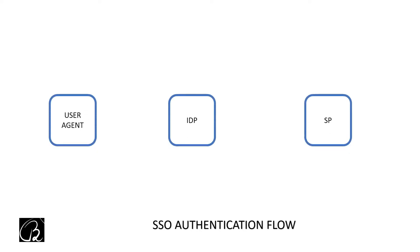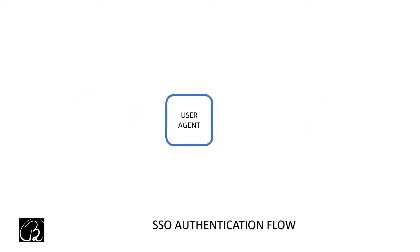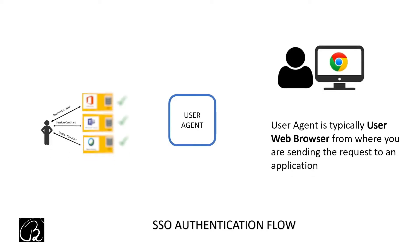To understand SSO authentication flow, you need to know about three important things: User Agent, IDP, and SP. The first one is User Agent — it is typically the user's web browser, from where you are sending the request to an application, from where you want to access some applications.